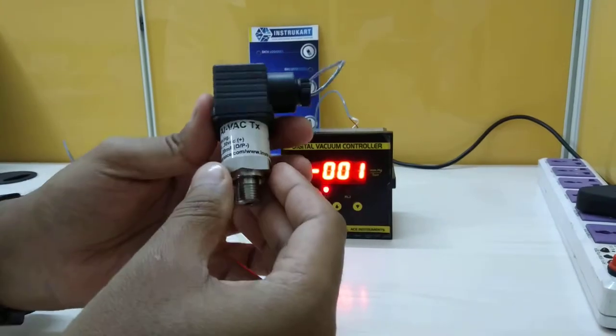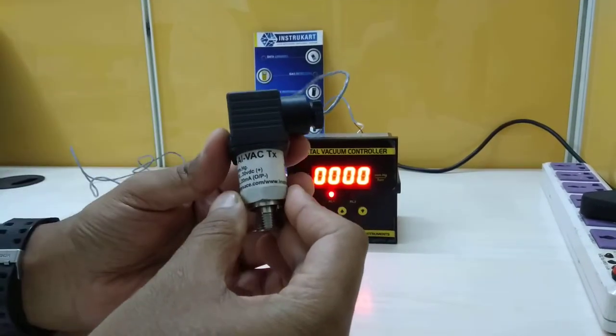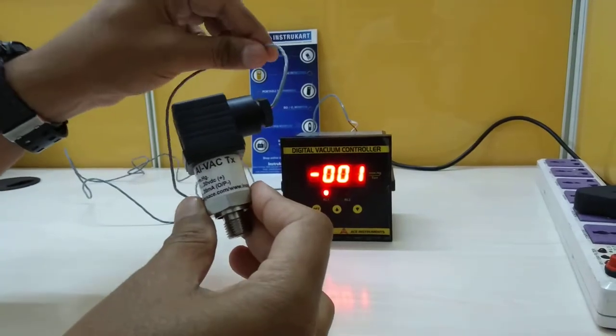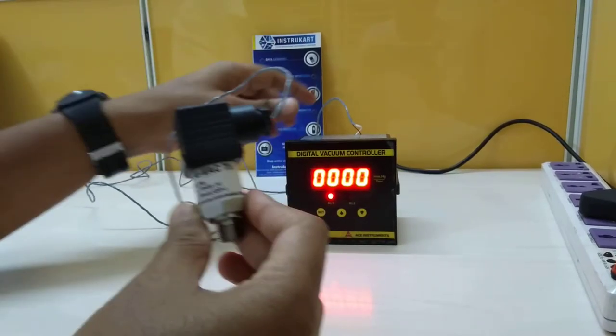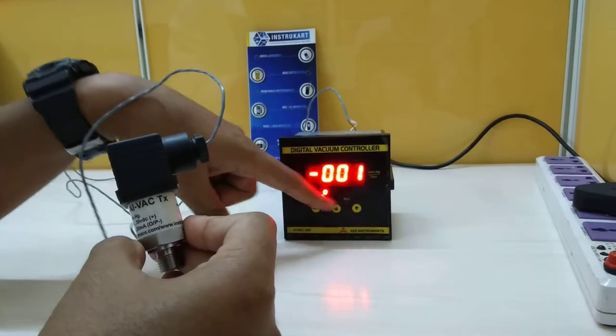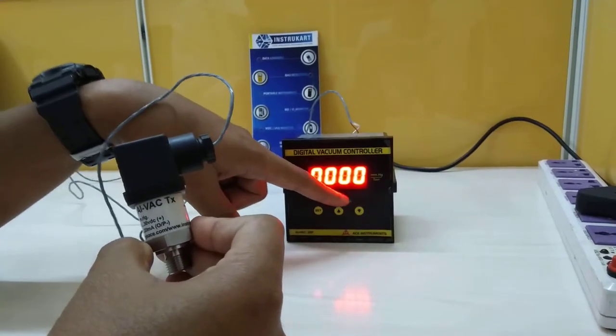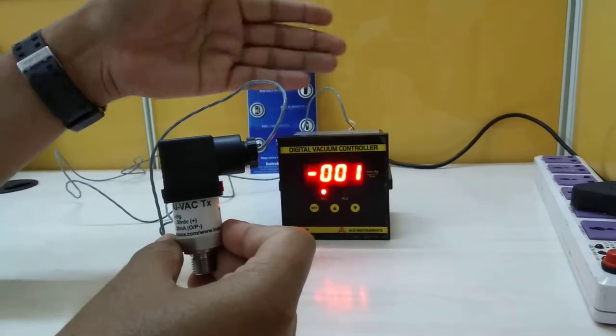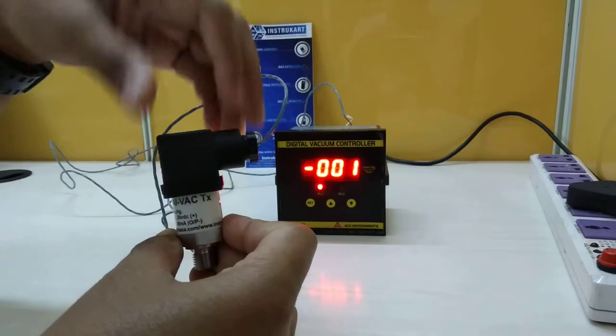As you can see, this is a vacuum transmitter with 4 to 20 milliamps transmission which goes to the indicator and controller where we have two relay outputs. These two relay outputs can be used for controlling anything like a motor you want to control on the relay set points.